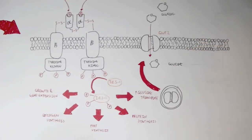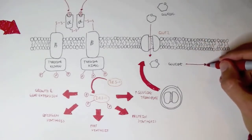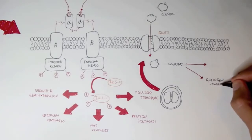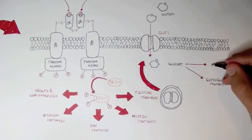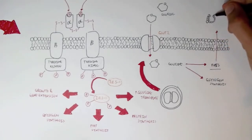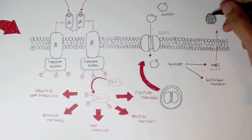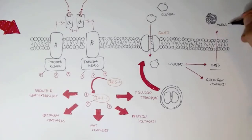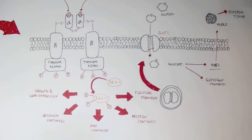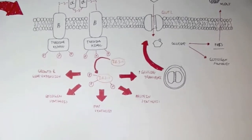So glucose is inside the liver now and can have a number of fates. It can be stored as glycogen through glycogen synthesis, or it can be converted to fats, which will then be packaged up as VLDLs — very low-density lipoproteins — and exported into the adipose tissue for storage.